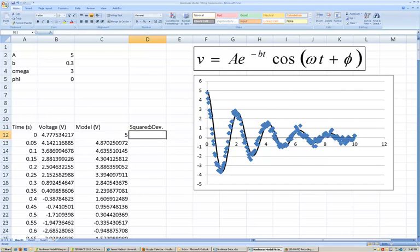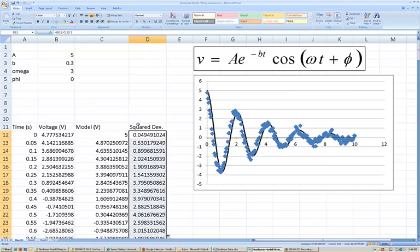And to calculate that, I'm going to take the voltage that was actually measured, subtract from that the voltage that is predicted by the model, and square that. So this is our squared residual between the model and the voltage that was actually measured. And I will fill that all the way down so that I have the squared deviation for all of the time that indicates how well the model matches the actual data that we recorded.